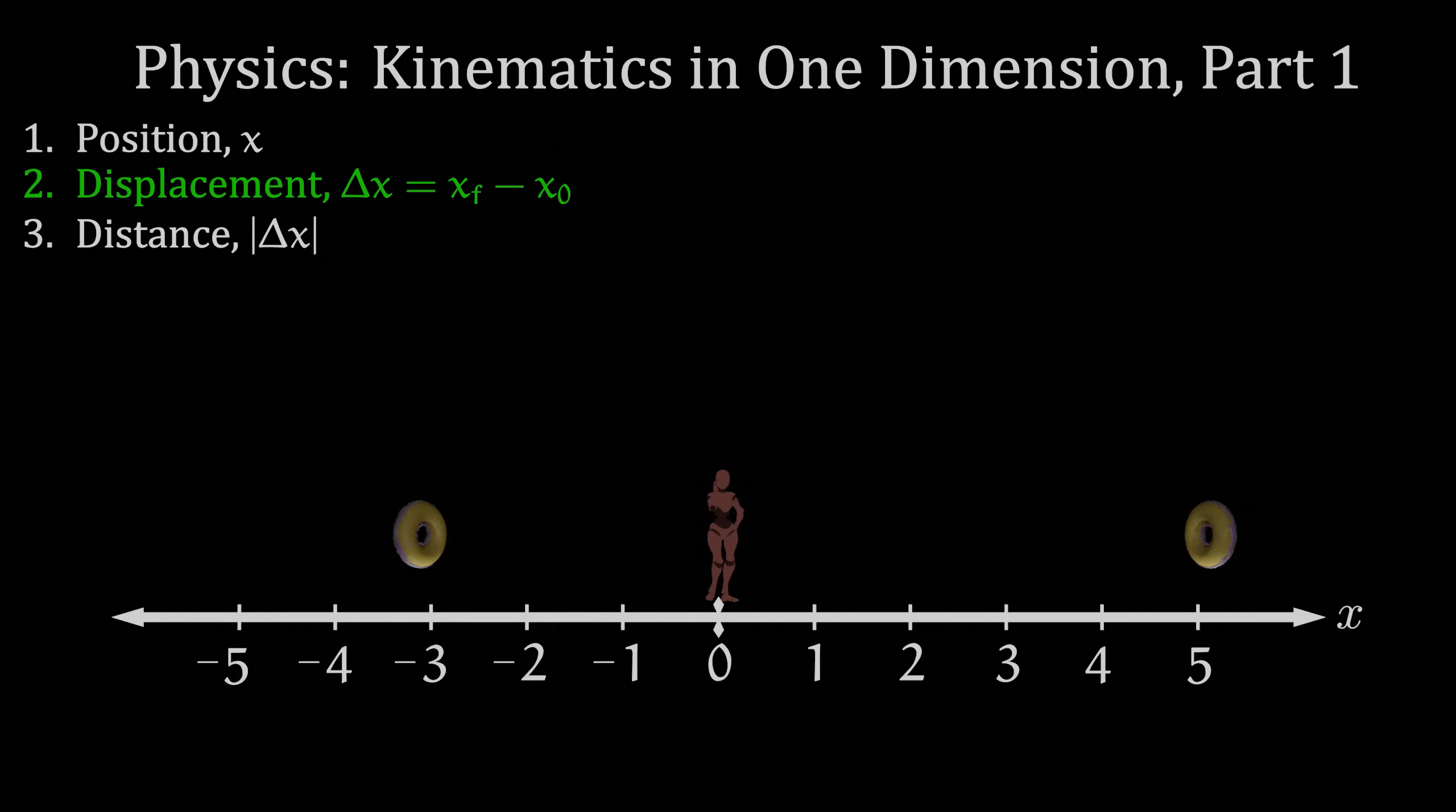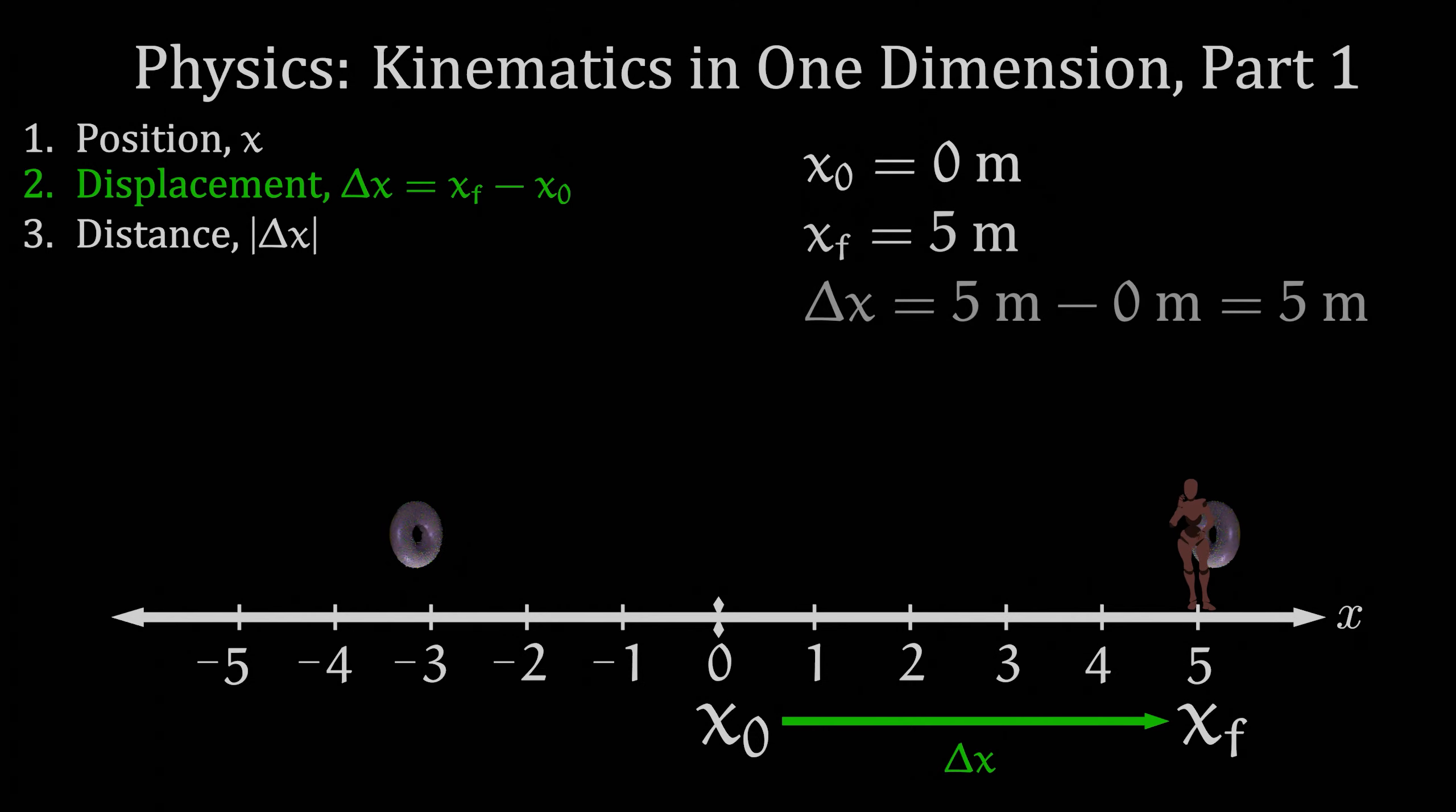Starting at the origin, my initial position is x0 is equal to zero meters. I end up at the first donut with the final position of x sub f equal to five meters. So my displacement to the first donut from the origin is delta x is equal to five meters minus zero meters, which is equal to five meters.